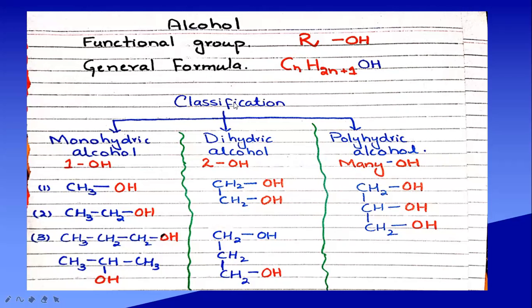Talking about classification: on the basis of number of hydroxyl (OH) groups, we classify alcohols into different groups. We have monohydric alcohol, dihydric alcohol, and polyhydric alcohol. Monohydric alcohols are those which contain only one hydroxyl group — like methanol (one hydrogen of methane replaced by hydroxyl), ethyl alcohol, N-propyl alcohol, and isopropyl alcohol.